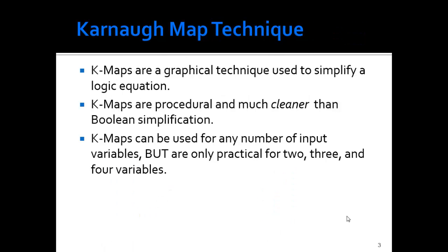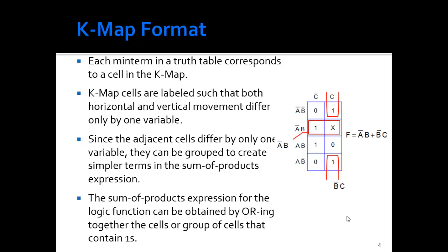K-maps are a graphical technique. They're cleaner and they're very procedural. They can be used for any number of input variables, but we only practically use them for two, three, or four variables because you actually need more than two dimensions once you get more than four variables. Each place in a K-map corresponds to an address in a truth table, and they're labeled so that as I move from one cell to the next, only one variable changes.